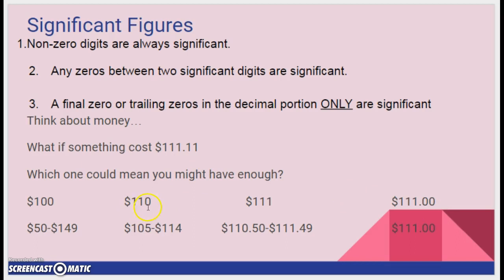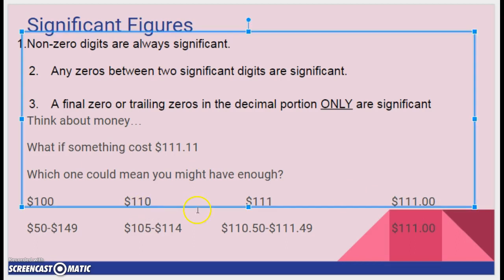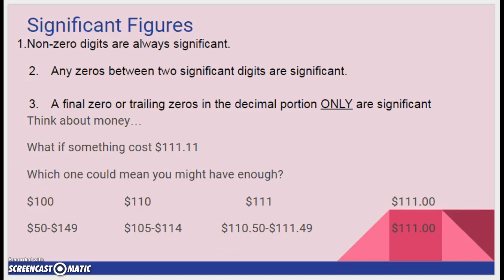For this one, well, I might have a few singles. If I put a dot after it, then I would know I had exactly 110. Or if I did that, I have exactly 110 because I don't need these zeros except to tell you that I have exactly that much money.